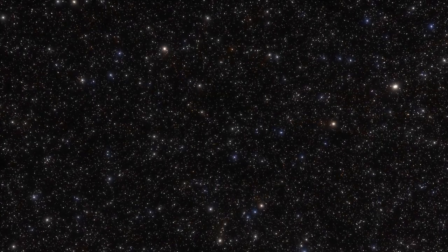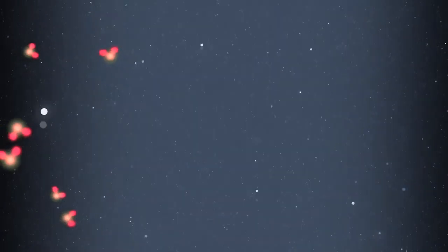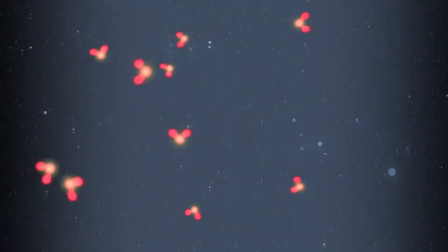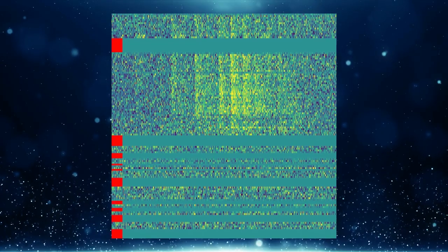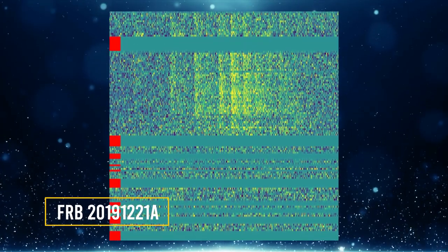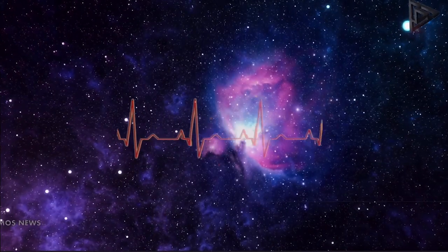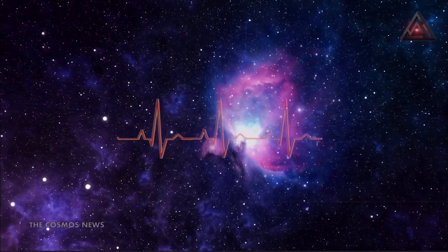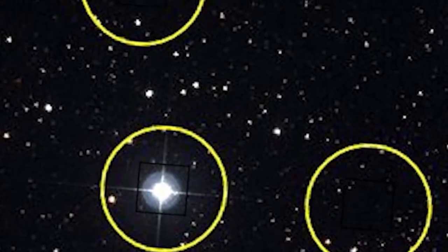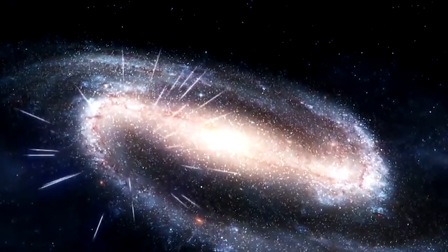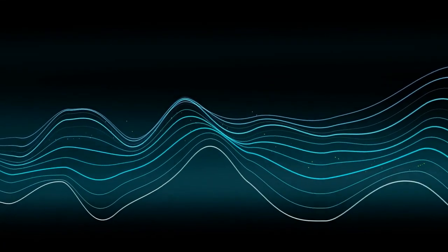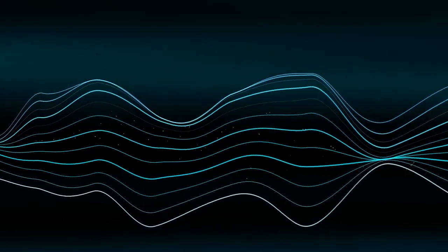According to the scientists, the newly discovered FRB was particularly strange since it tended to repeat a regular pattern, similar to a beating heart. The mysterious signal known as FRB 20191221A lasted far longer, roughly 1000 times longer than the average FRB, prompting questions about what could have produced it. As of the time of making this video, this FRB is the longest lasting FRB ever identified with the most distinctive periodic pattern.